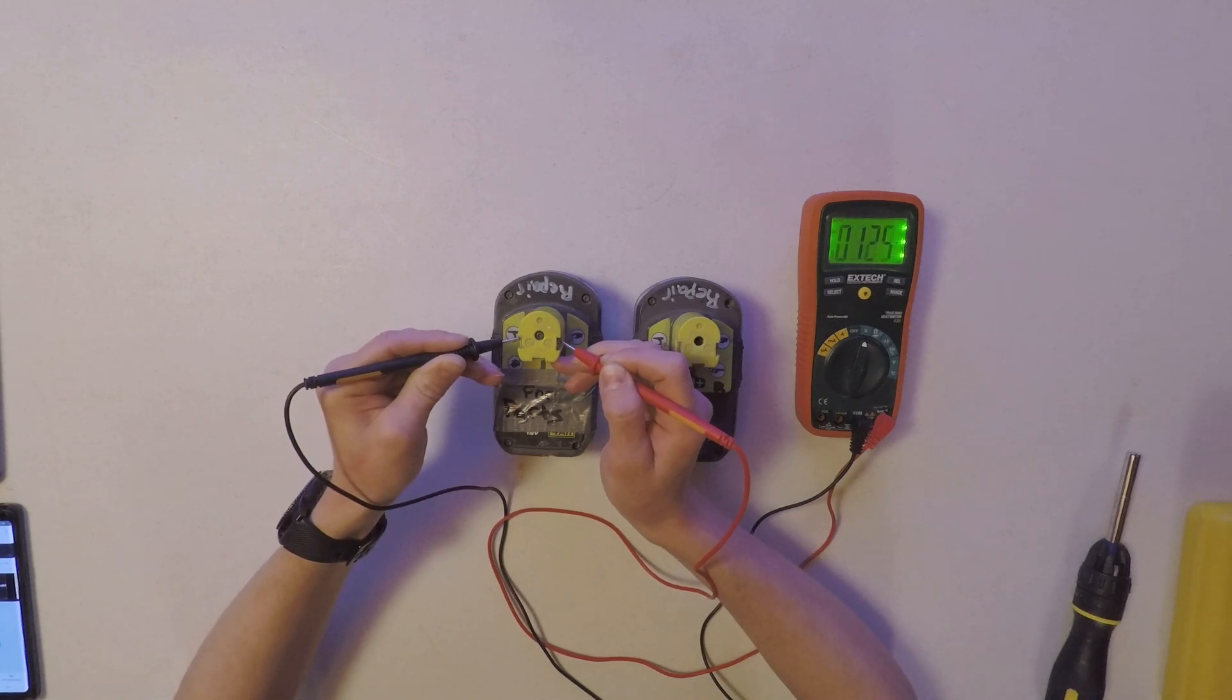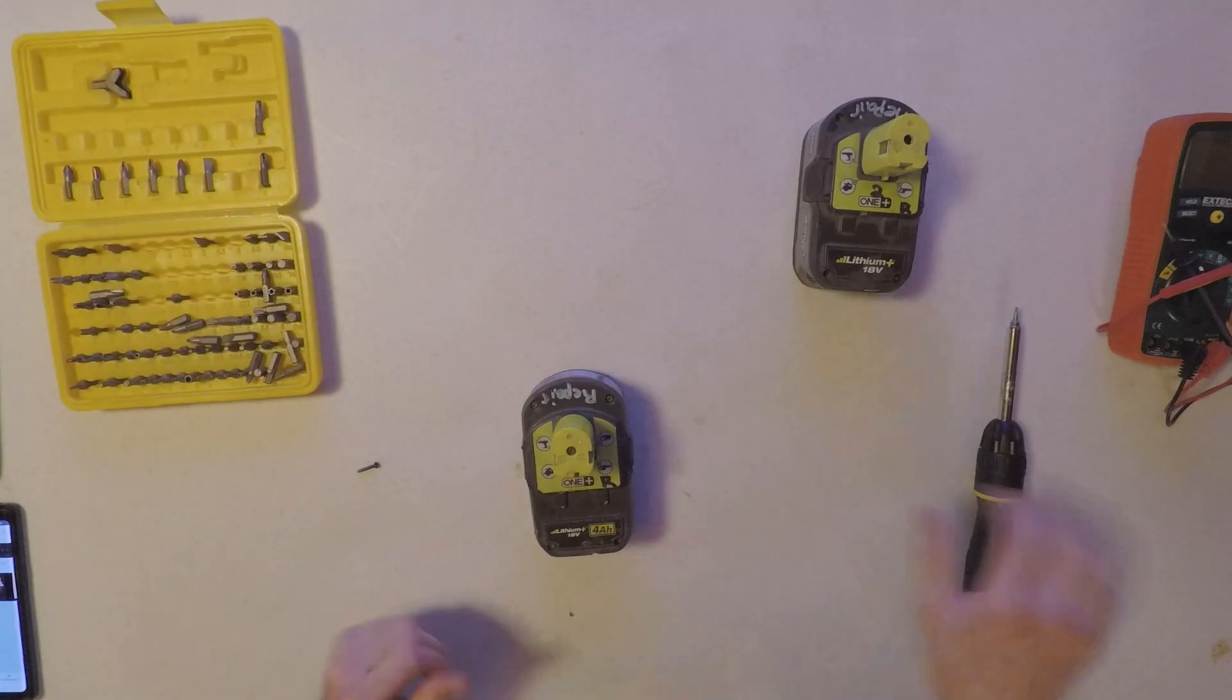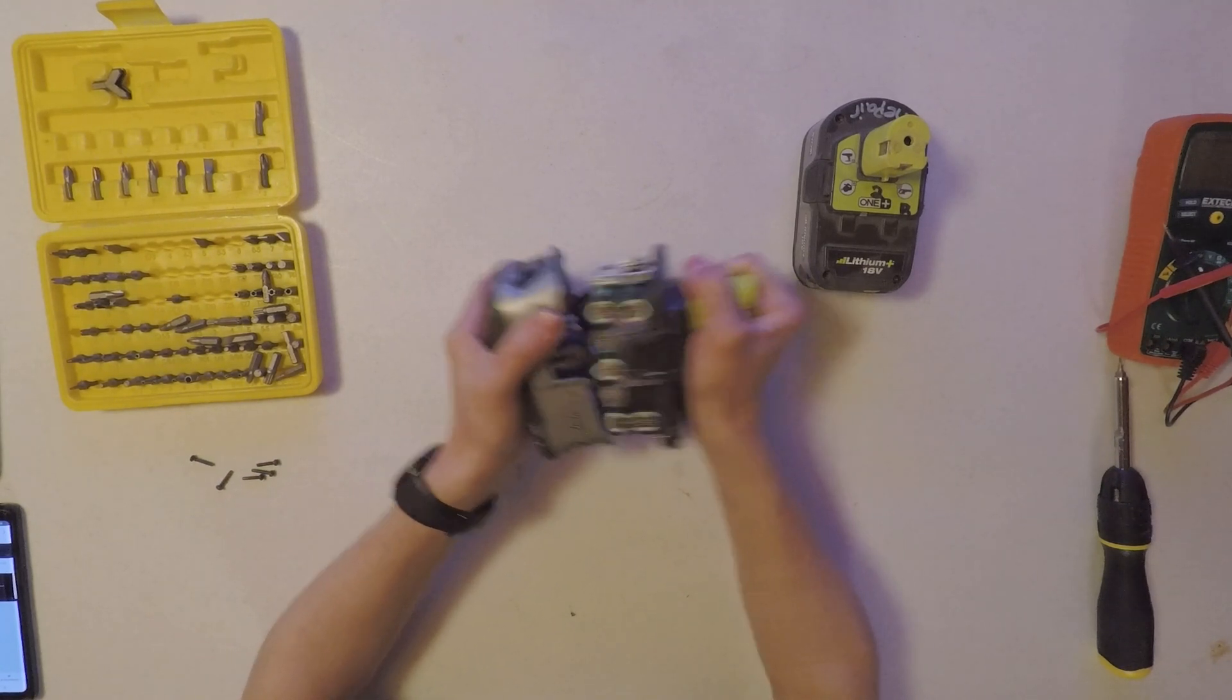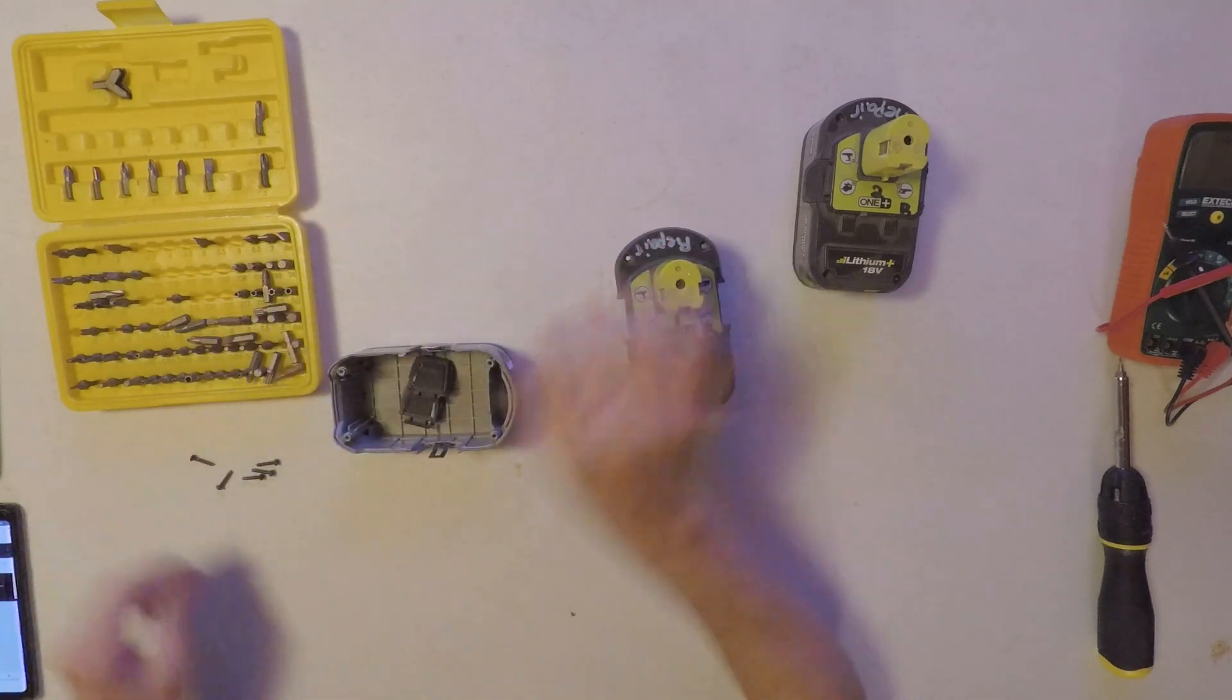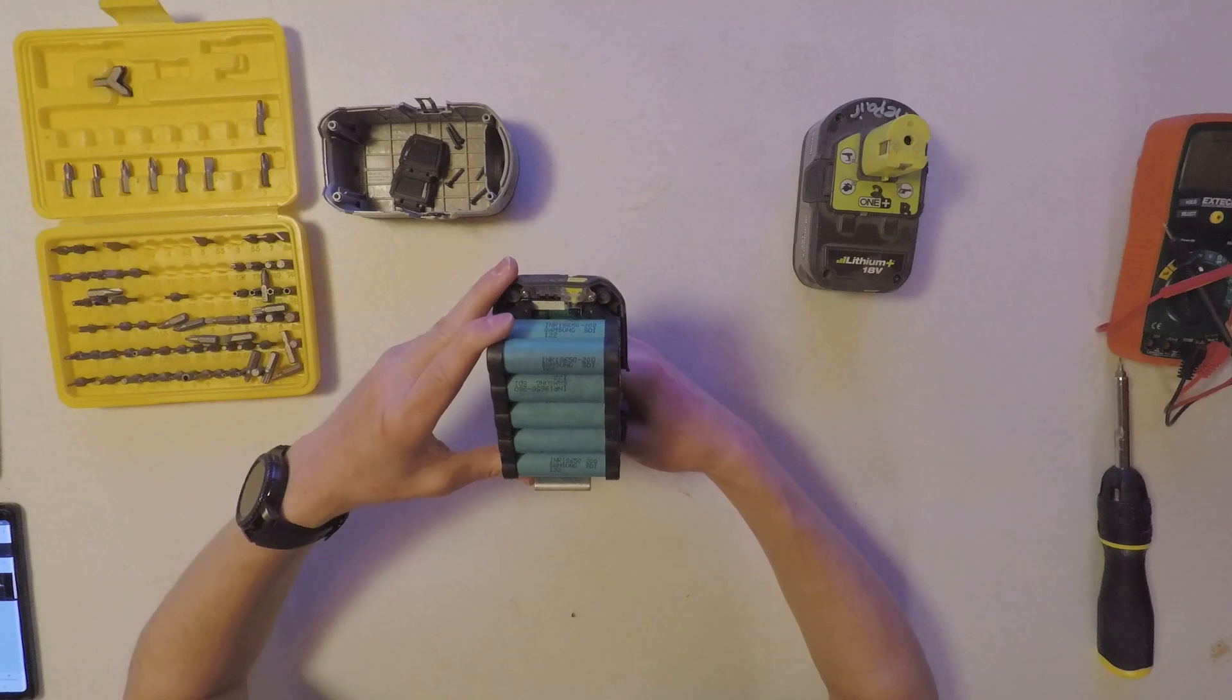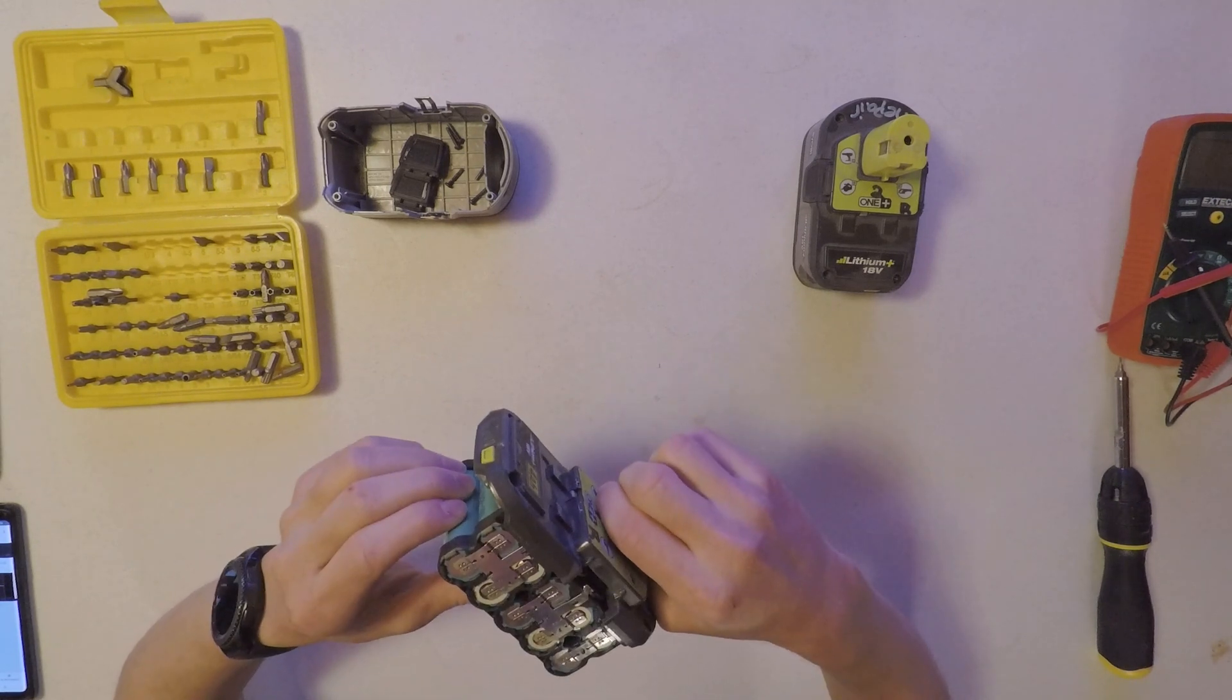It's not really giving us a good number there. All right, well let's see what's inside. So there you go, a whole bunch of INR 18650-20Q Samsung cells, a whopping total of looks like 10 of them. The battery meter still works, says it's almost empty.